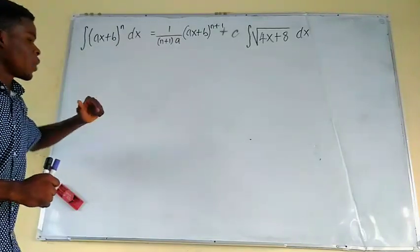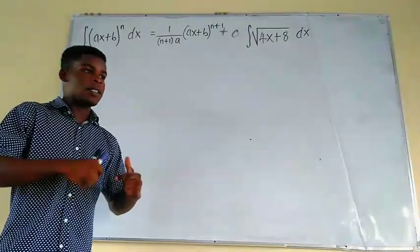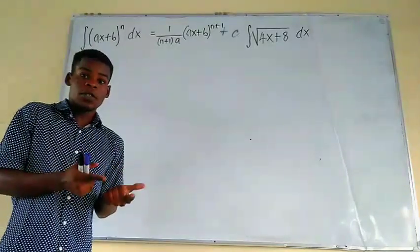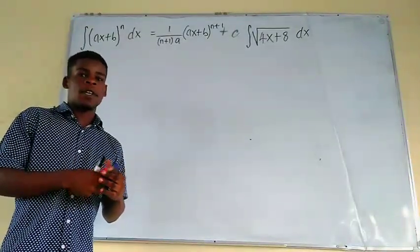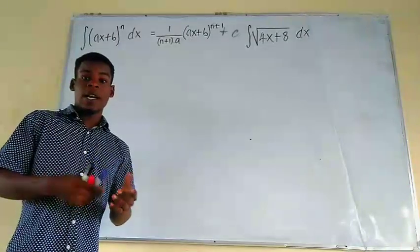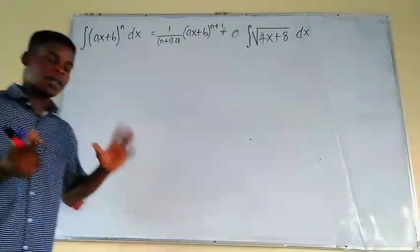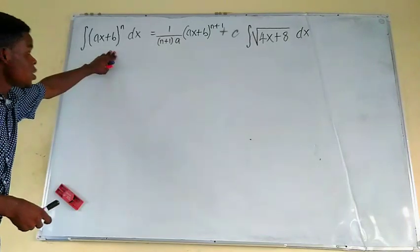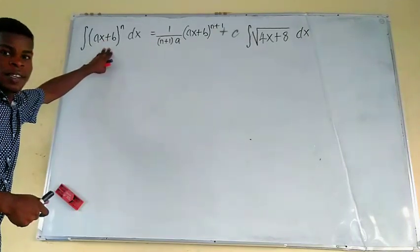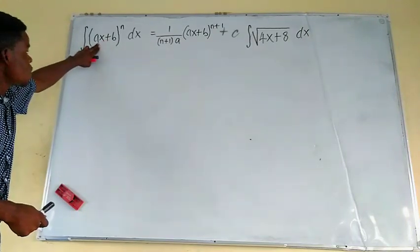Change of variable means we're going to change the variable from X to some other variable, so that we make the integrand to be simplified. We can actually reduce it to a power function or something nice that we can know the defined anti-derivative for. From there, we do a backward substitution.